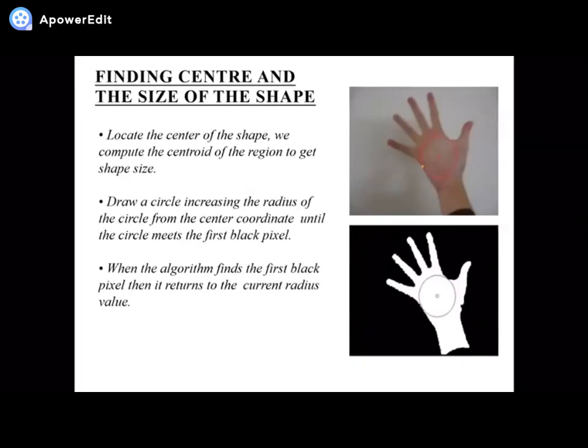Then we find the center of the image and size of the shape. We locate the center of the shape and compute the centroid. We compute the centroid of the region to get the shape size. We draw a circle increasing the radius from the center coordinate until the circle meets the first black pixel. When the algorithm finds the first black pixel, it returns the current radius value. Through this, we find the center and can determine the shape of the image.